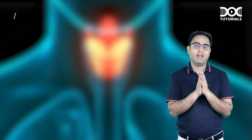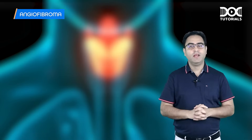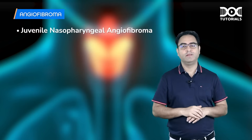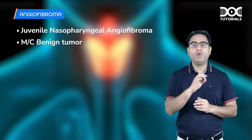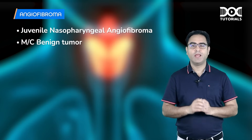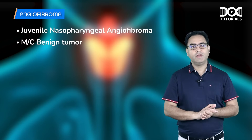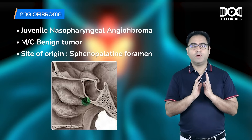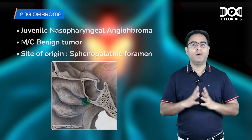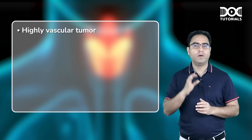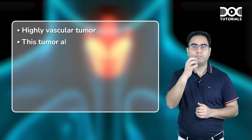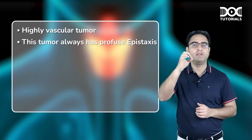Now let us learn about angiofibroma — the topic most asked about in pharynx. The complete name is juvenile nasopharyngeal angiofibroma. It is the most common benign tumor of the nasopharynx. The site of origin is the sphenopalatine foramen. It is a highly vascular tumor made of blood vessels, and it always presents with profuse epistaxis.